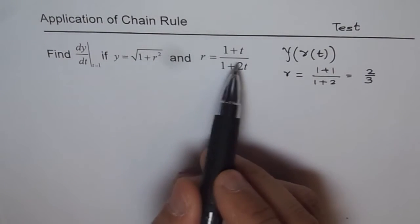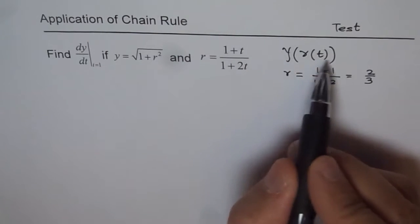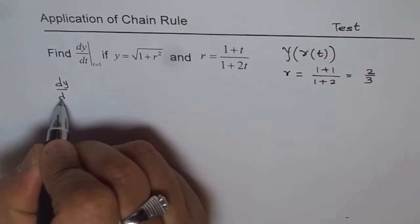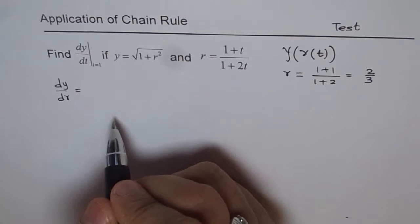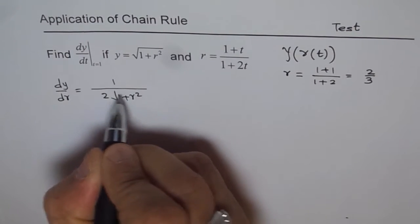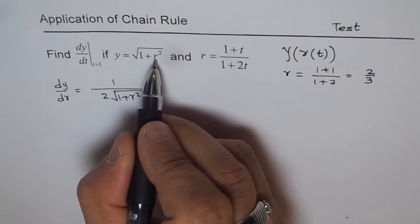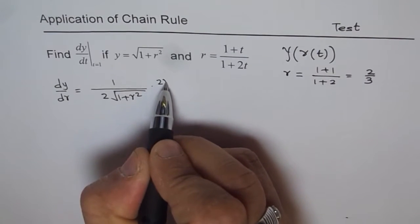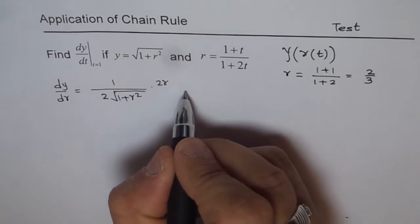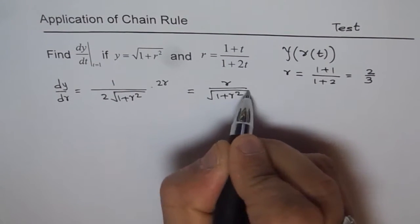Start with the outside function first — find dy/dr. For the square root function, dy/dr equals 1 over (2 times the square root of 1 plus r squared), and then the derivative of the inside function by chain rule is 2r. Simplifying, the 2s cancel and we get dy/dr equals r over the square root of 1 plus r squared.